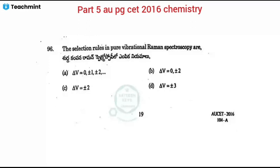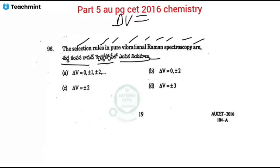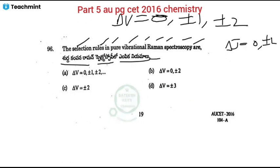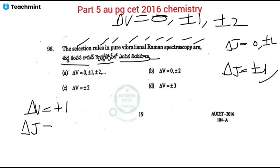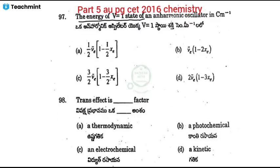Selection rules for vibration-rotation spectroscopy: ΔV = ±1 and ΔJ = 0, ±1, ±2. For pure rotational spectrum of rigid diatomic molecules: ΔJ = ±1. For Raman rotational spectrum: ΔJ = 0, ±2. For vibration-rotation spectrum: ΔV = +1 and ΔJ = 0, ±1. Option A is the correct answer.